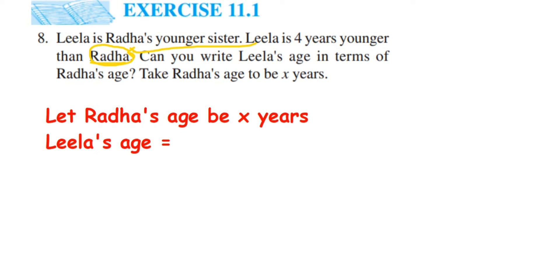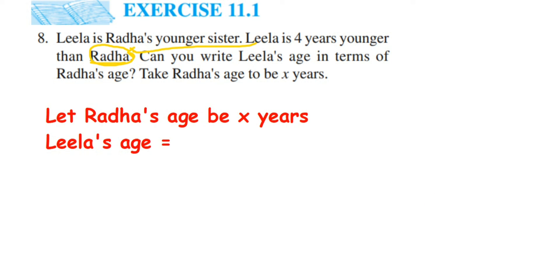Since Leela is four years younger than Radha, let me take an example. Suppose x is Radha's age. If Leela is four years younger, we subtract four years. So whatever her age is, remove four. If she's elder it will be x plus four; if younger it will be x minus four. So Leela's age is x minus four.